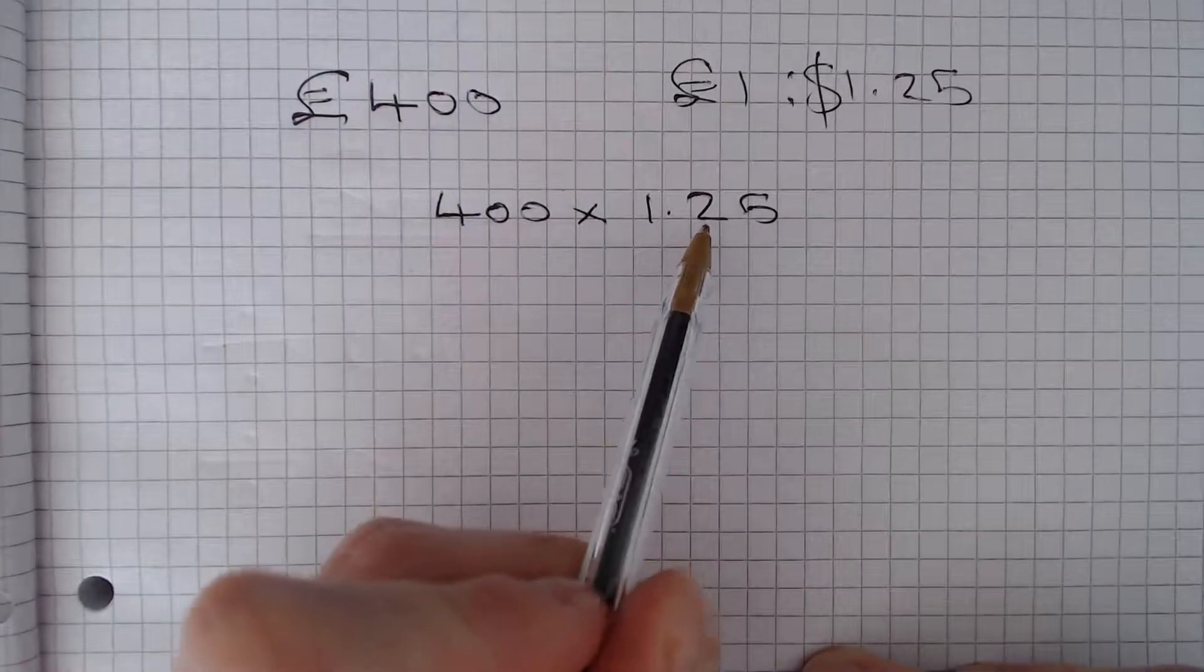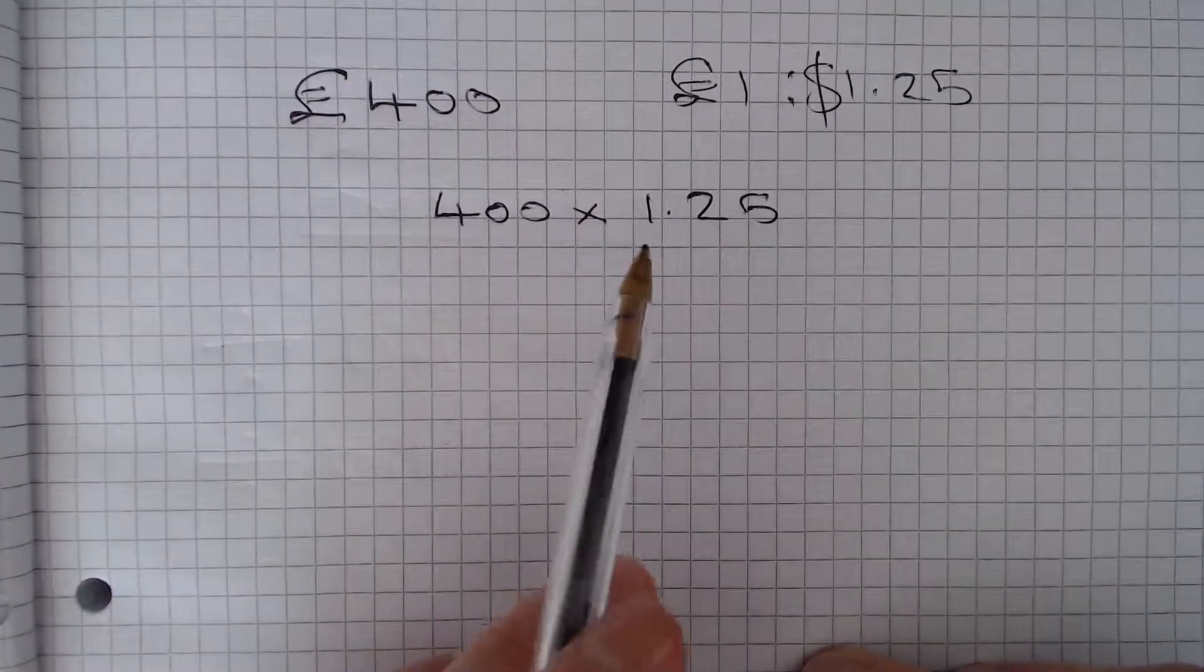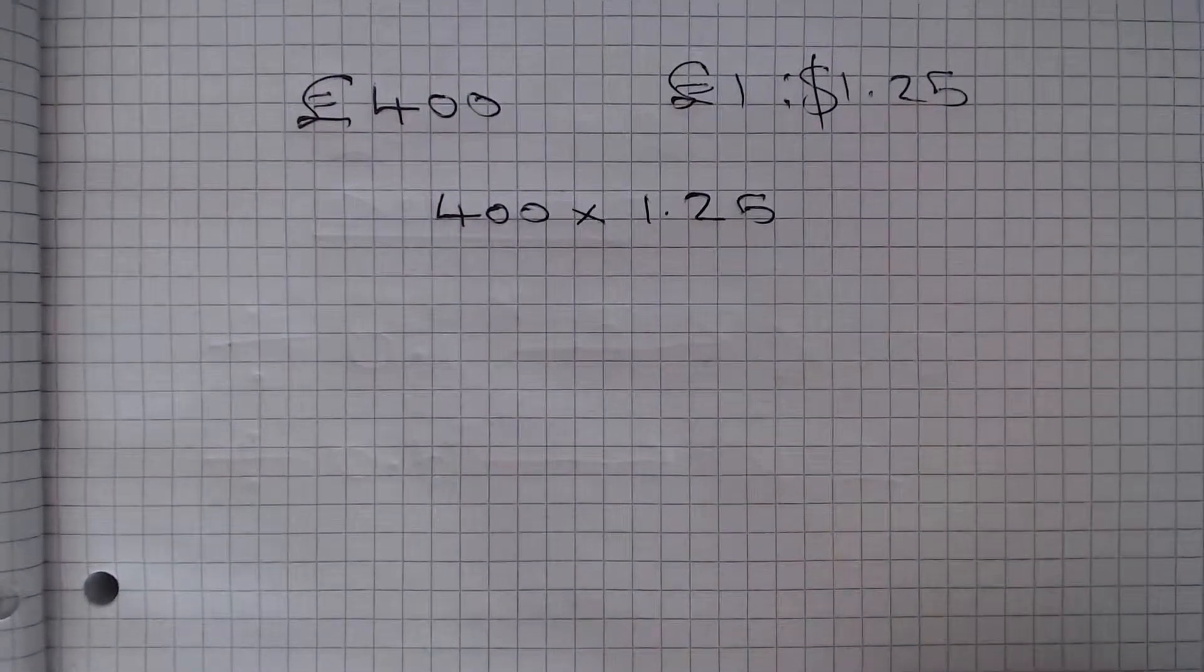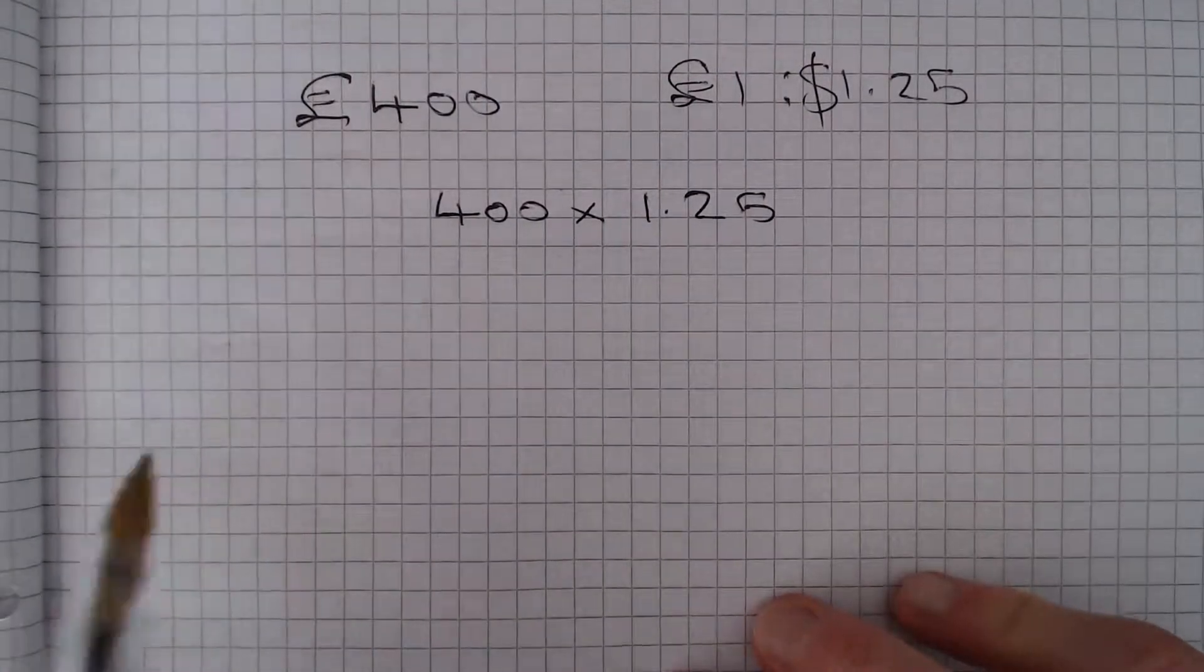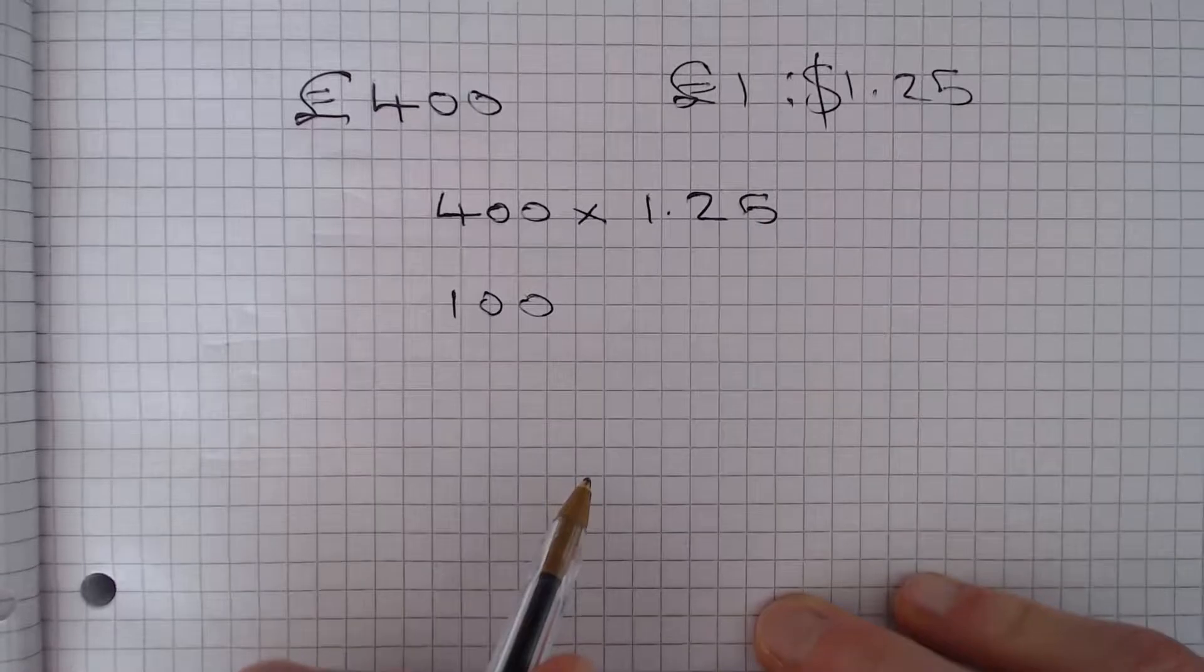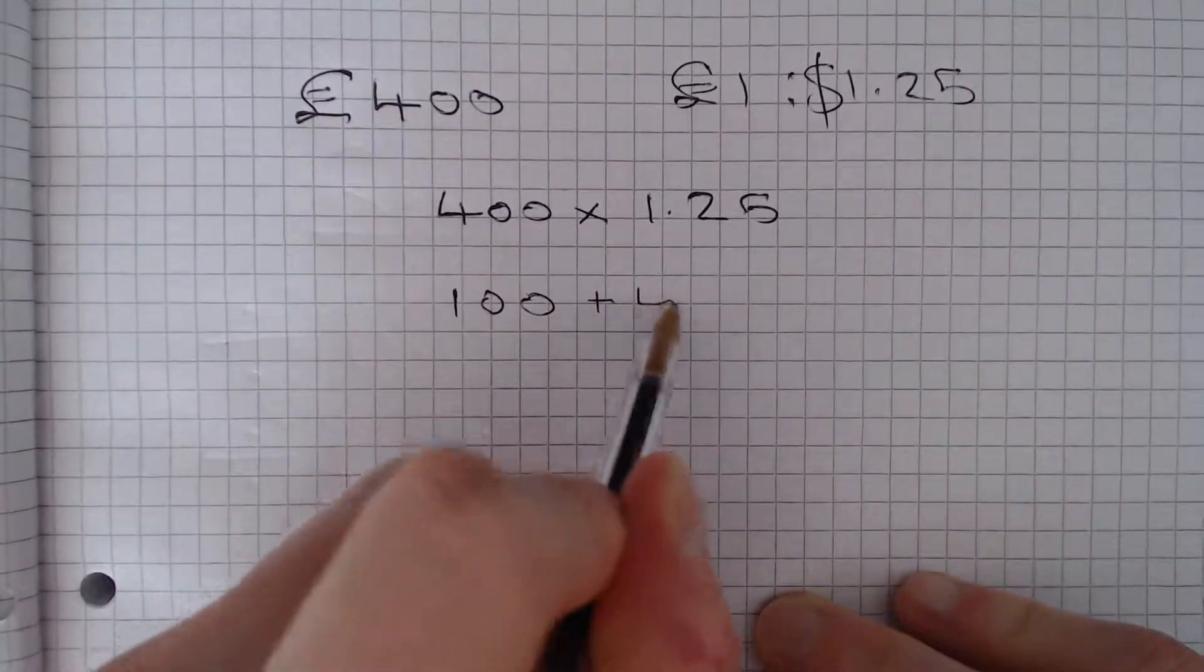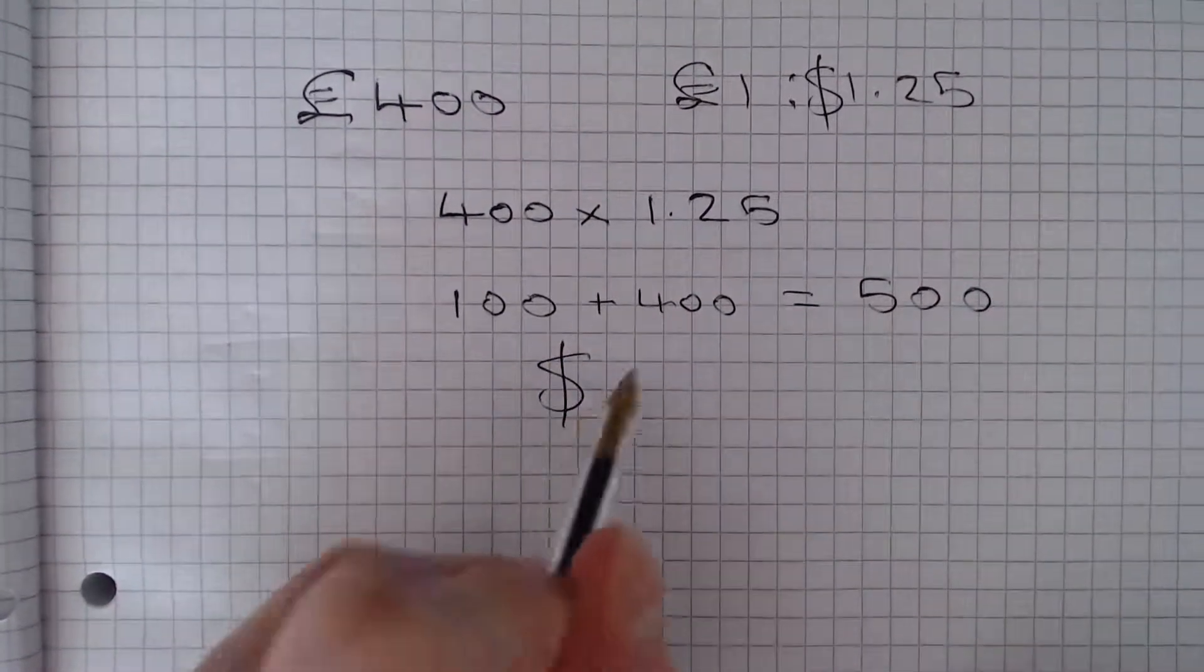So notice that 0.25, that's a quarter. So we're timesing this by 1 and a quarter. So if we times something by 1.25, it's obviously increased by 25% or increased by a quarter. Now a quarter of 400 is 100, and that's our increase. So we're just going to do 100 plus 400 is 500. So the answer should be $500.